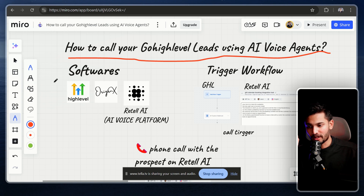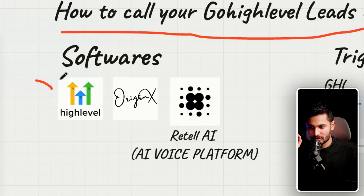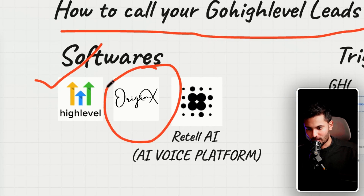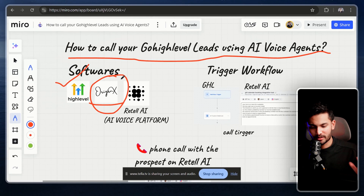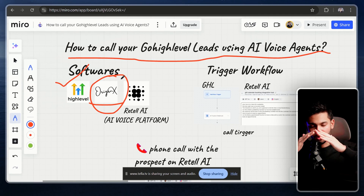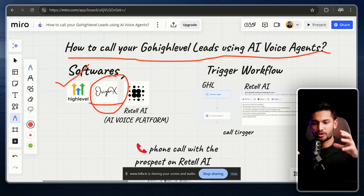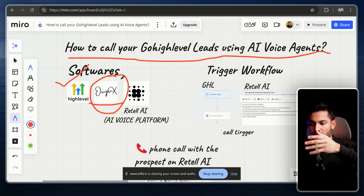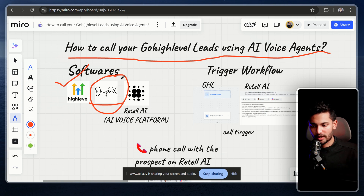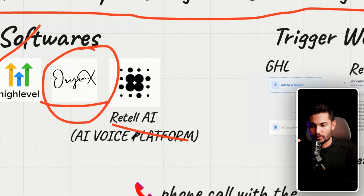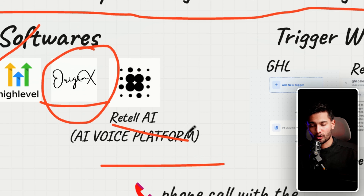The software you're going to need is first GoHighLevel — or my version of GoHighLevel which has all the automation templates, integrations, and custom configurations to make sure any AI agent works properly. The second software is Retell AI, where we're going to create the AI voice agent.